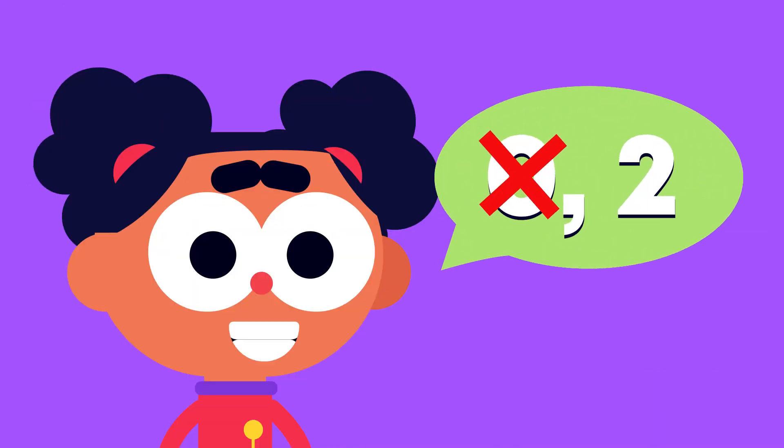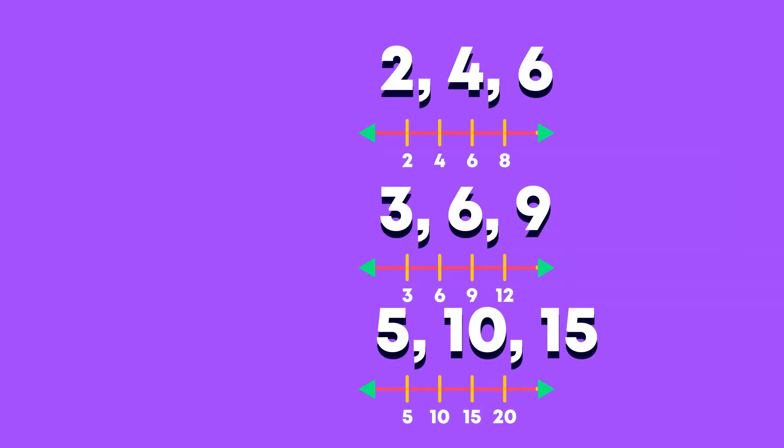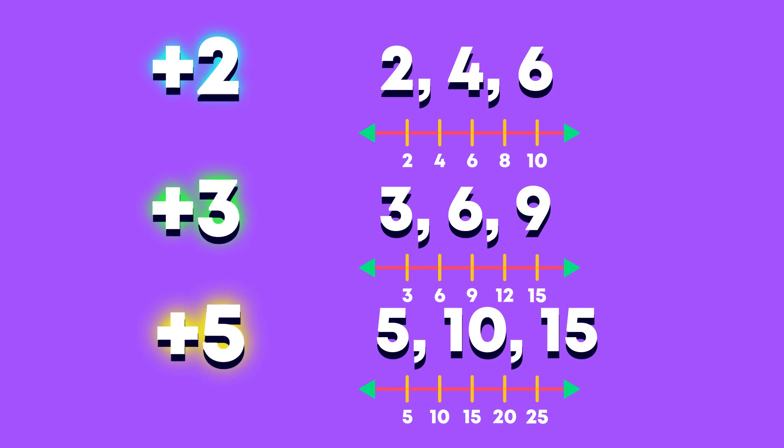Did you know that we do not have to start from 0 when we skip count in 2s, 3s or 5s? When we count forwards in 2s, 3s or 5s, we need to add the number we are counting in each time. I'll show you how.